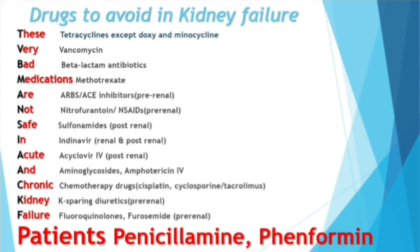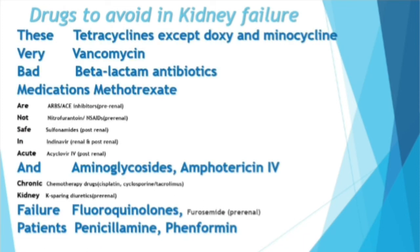To revise: most antibiotics, except for sulfonamide, lead to direct renal injury. These include tetracyclines, vancomycin, beta-lactam antibiotics, aminoglycosides, phenformin, fluoroquinolones, and amphotericin. These antifungal and antibiotic agents all lead to intrinsic renal injury.